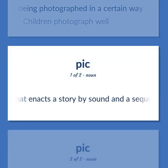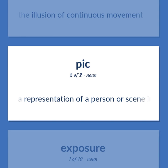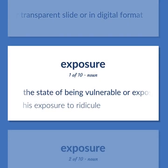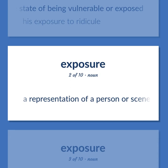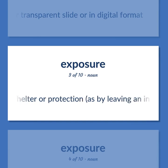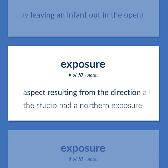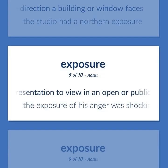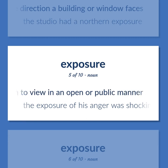Photograph: A form of entertainment that enacts a story by sound and a sequence of images giving the illusion of continuous movement. A representation of a person or scene in the form of a print or transparent slide or in digital format. Exposure: The state of being vulnerable or exposed. His exposure to ridicule. A representation of a person or scene in the form of a print or transparent slide or in digital format. Abandoning without shelter or protection, as by leaving an infant out in the open. Aspect resulting from the direction a building or window faces. The studio had a northern exposure. Presentation to view in an open or public manner. The exposure of his anger was shocking.